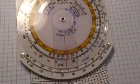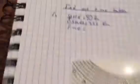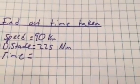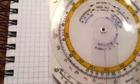Then, on the outer scale, since we have traveled 225 nautical miles, we're going to find that out. We're just going to have to flip this here.